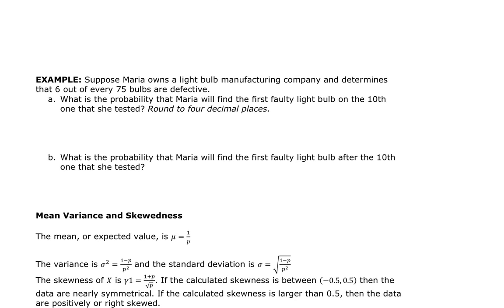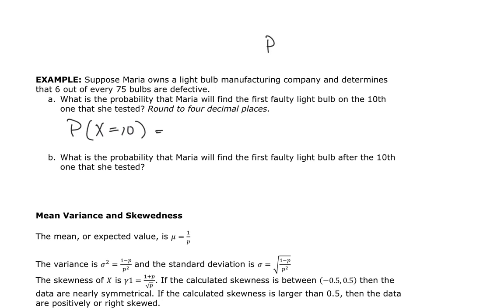Let's look at the first example. Suppose Maria owns a light bulb manufacturing company and determines that 6 out of 75 light bulbs are defective. What is the probability that Maria will find the first faulty light bulb on the 10th one she tests? We write this symbolically as P(X = 10). Using the formula P(X = K) = Q^(K−1) × P, we identify that success means finding a defective bulb, so P = 6/75.